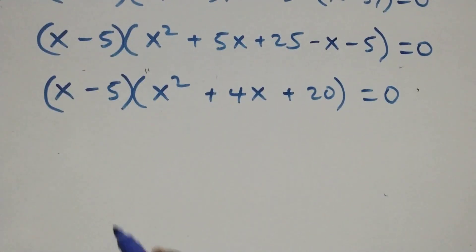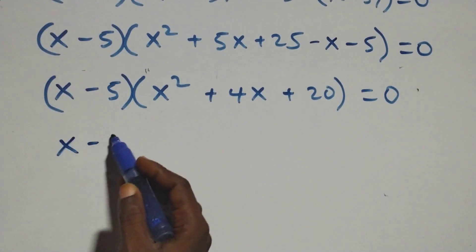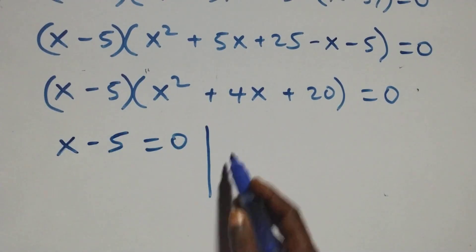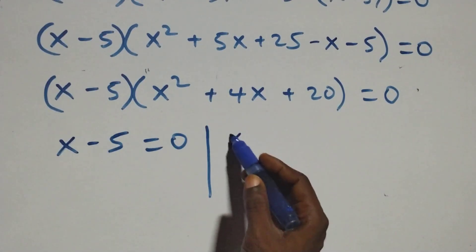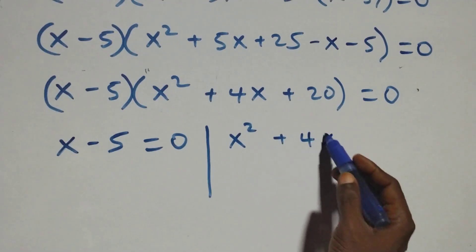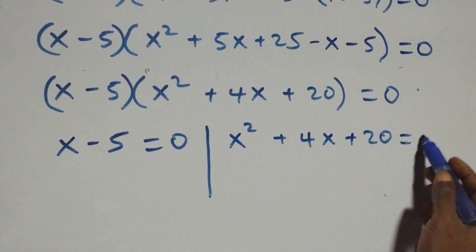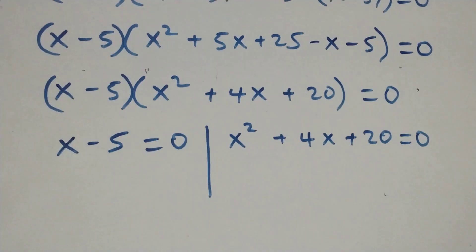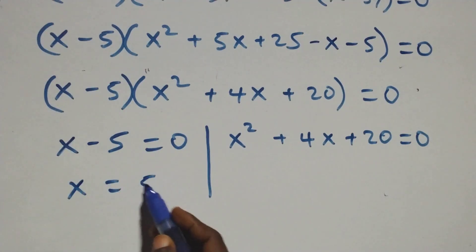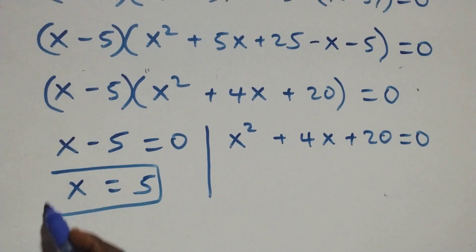We have two possible cases. The first: x minus 5 equals 0. Or we have x squared plus 4x plus 20 equals 0. Solving the first case gives x equals 5, which is a real solution.